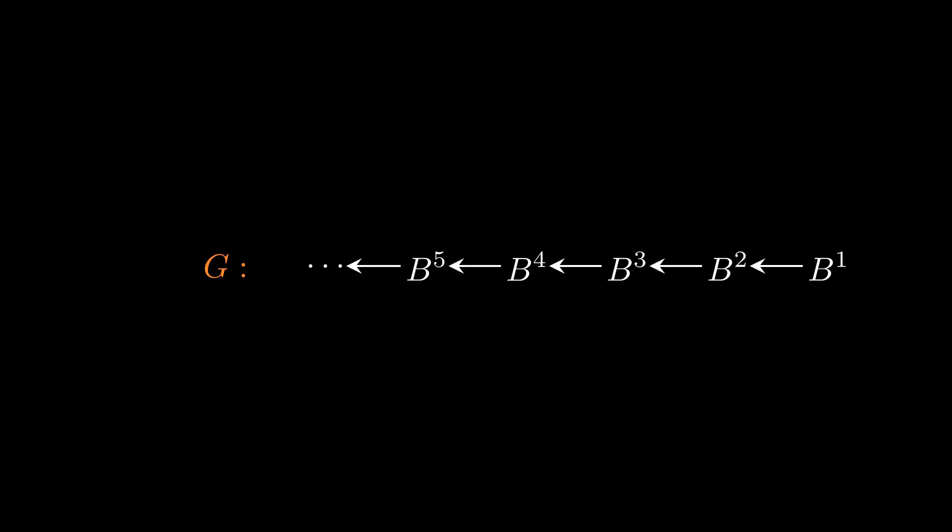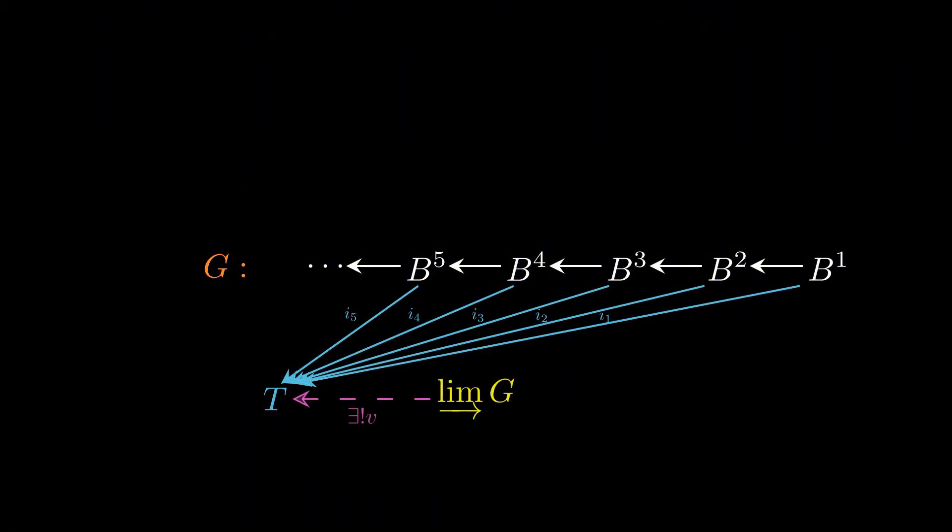Specifically, given another diagram G, the colimit of G is some object with a property that it admits injection maps iota_j from each object B_j in the diagram. A colimit is similarly universal with this property. If any other object T has its own injection maps i_j from each object B_j, then there exists a unique map v from the colimit of G to T.